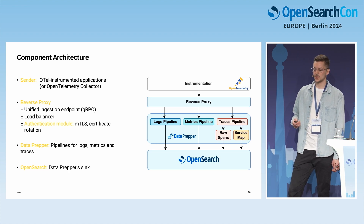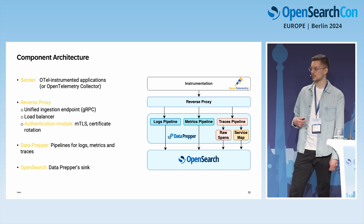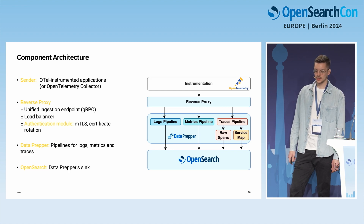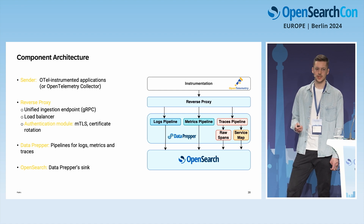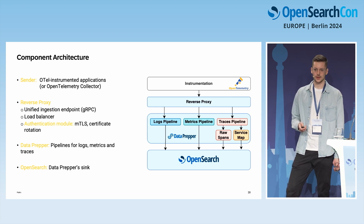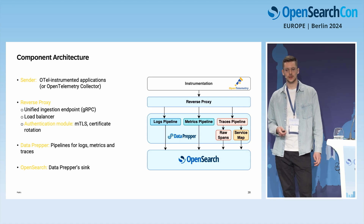We have a reverse proxy placed in between, offering one unified ingestion endpoint via gRPC where users ingest their telemetry data. The reverse proxy also enables load balancing when running multiple instances of DataPrepper in a zone-aware way, avoiding cross-zone traffic when communicating with DataPrepper instances.